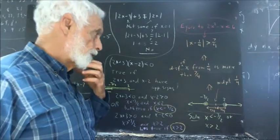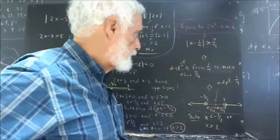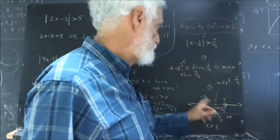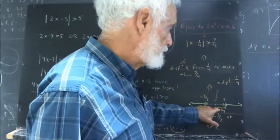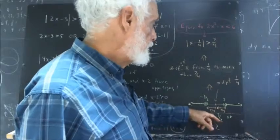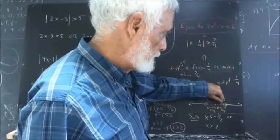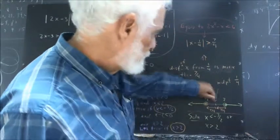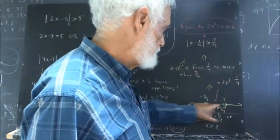Going a bit further than the question required: what is the midpoint of the interval between negative 3 halves and 2? You average the two numbers. Negative 3 halves plus 2 equals 1 half, divided by 2 gives 1 fourth. The midpoint is 1 fourth. We can verify: from 1 fourth to 2 the distance is 7 fourths, and from 1 fourth to negative 3 halves the distance is also 7 fourths.